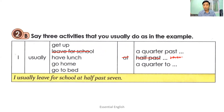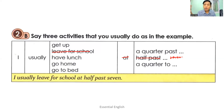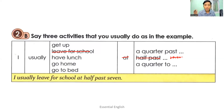When do you usually go to school? If you usually go to school at a quarter to eight, you can say: I usually leave for school at a quarter to eight. When you usually have lunch, you can say: I usually have lunch at half past one — or perhaps half past eleven. I usually go home at a quarter past three. I usually go to bed at half past eight.